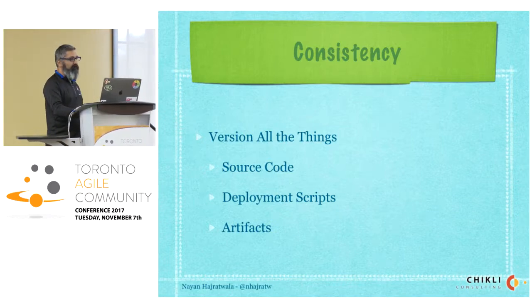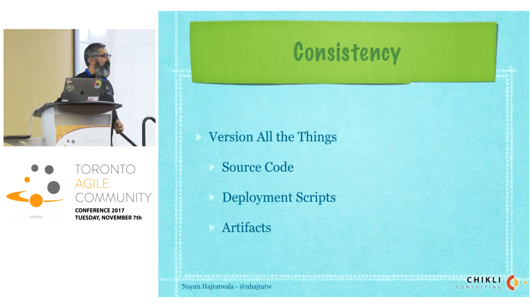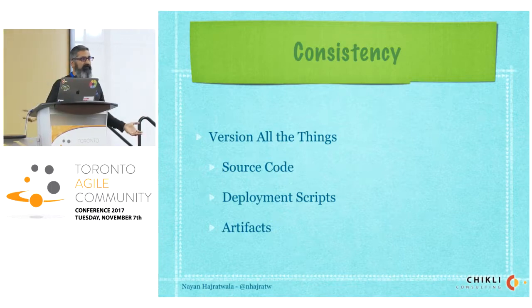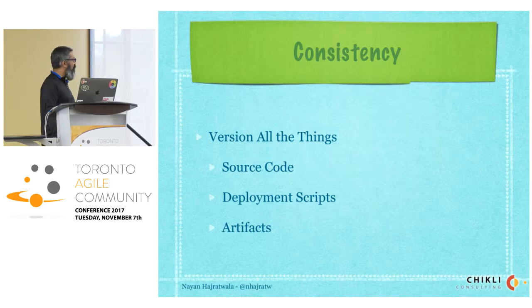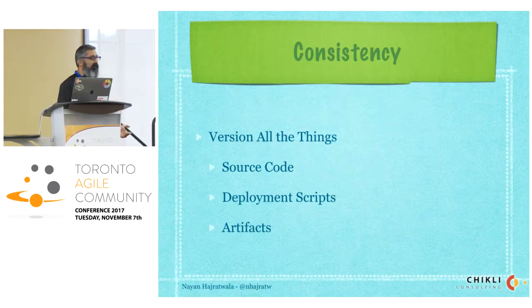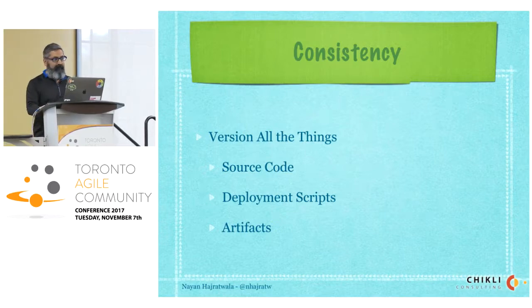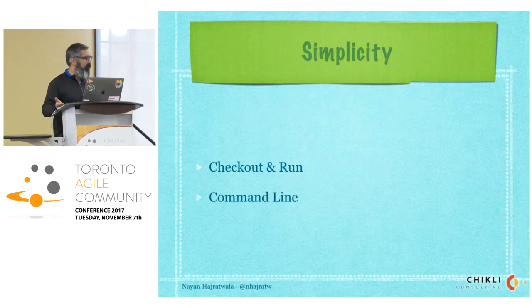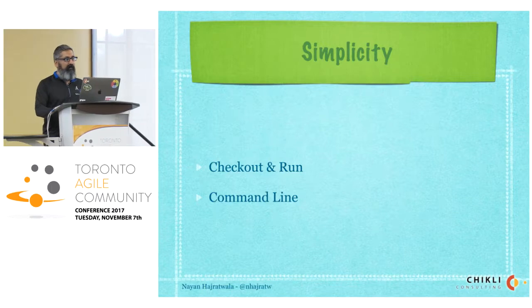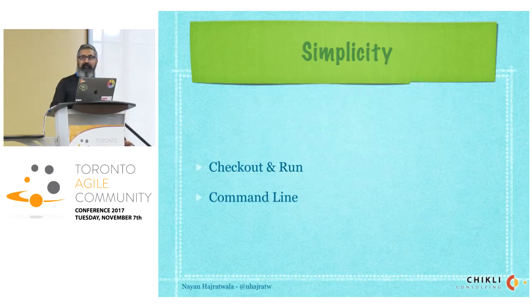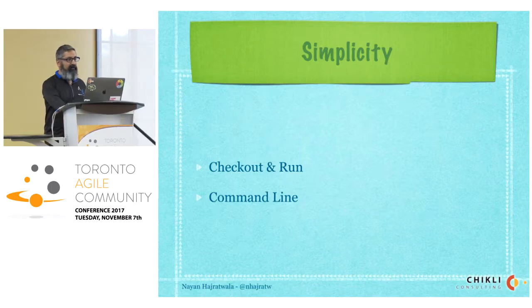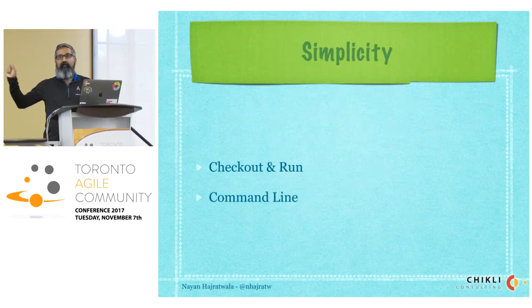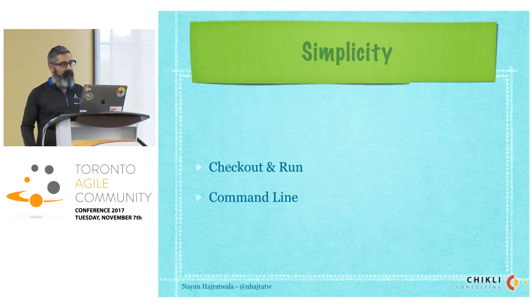One of the prime things you need for continuous deployment is consistency. Number one is to version all the things — all your source code, deployment scripts, artifacts, everything has to be versioned. If it's not versioned, you can't have repeatable builds. Simplicity is also key. You want to be able to check out your code and run it. If you have to go through a week-long process to get an environment ready, it's not going to work.